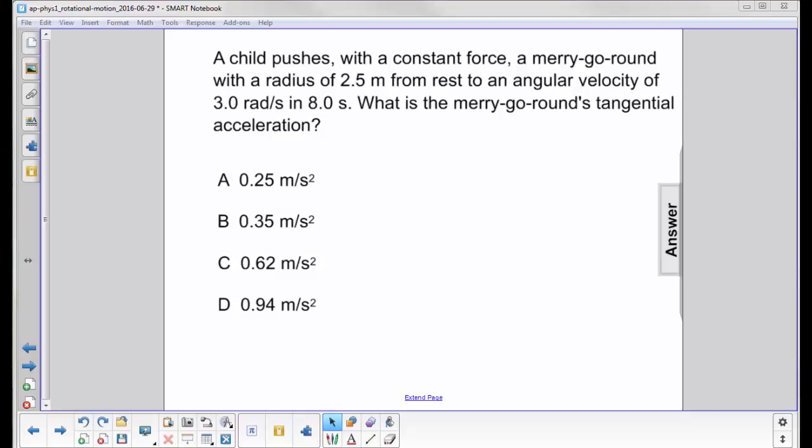A child pushes with a constant force a merry-go-round with a radius of 2.5 meters from rest to an angular velocity of 3.0 radians per second in 8 seconds. What is the merry-go-round's tangential acceleration?